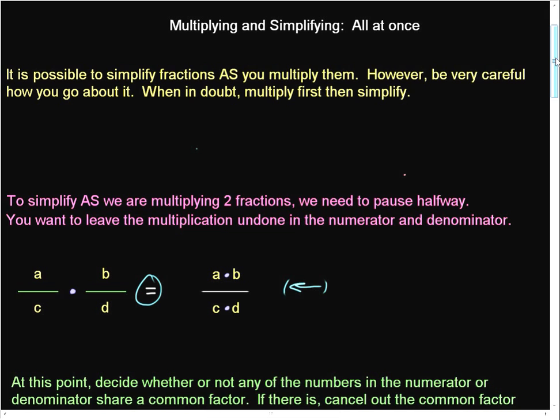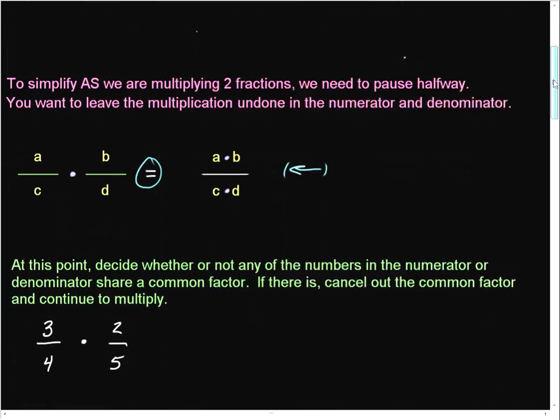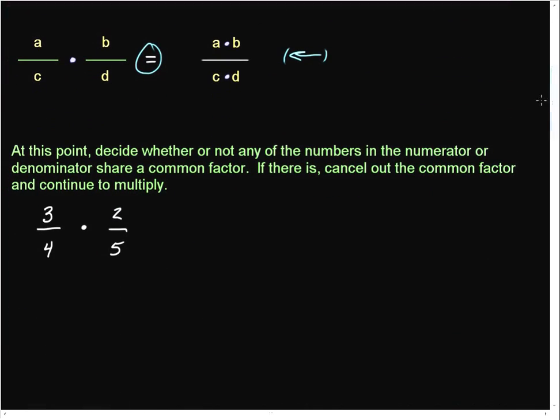So, if we use that to our advantage, then we can decide whether or not any of the numbers in the numerator and denominator share a common factor. And we can cancel these out before we multiply.